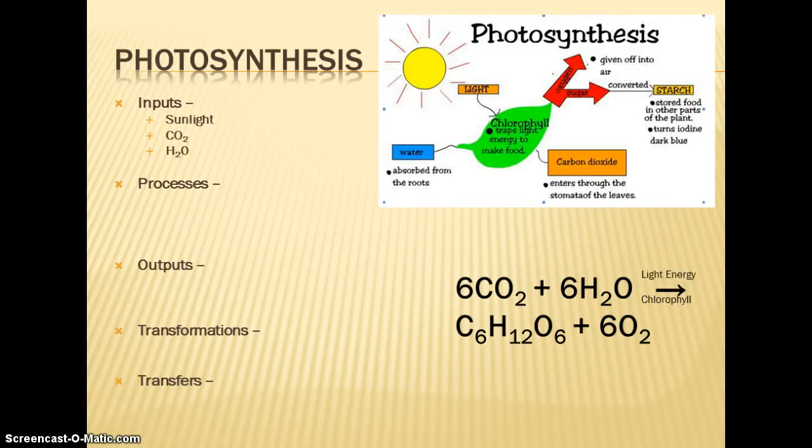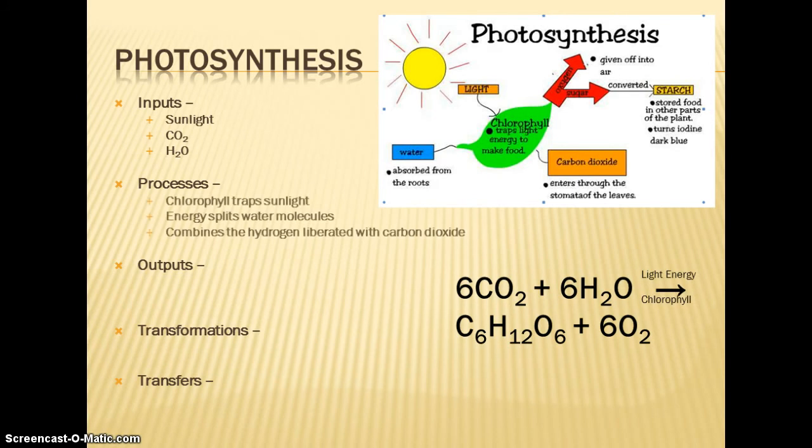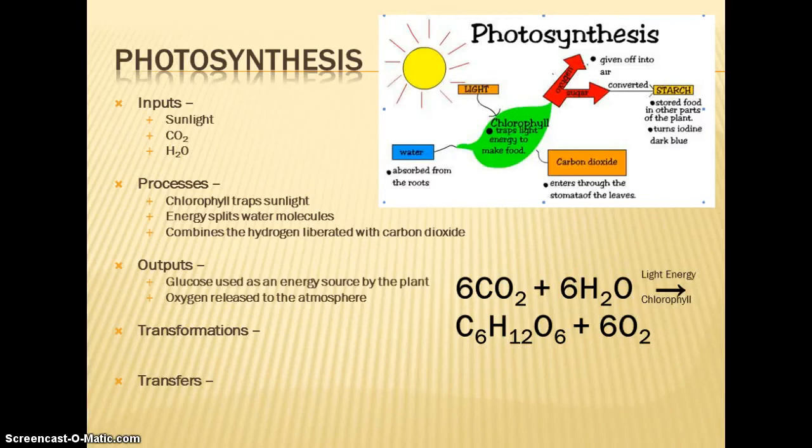Photosynthesis: our inputs are sunlight, carbon dioxide, and water. The processes that occur are chlorophyll in the plants traps that sunlight. The energy splits the water molecules, and that hydrogen from the water molecule is combined with carbon dioxide, and that's what gives us the glucose. So our outputs: glucose, which is the energy source used by the plant and also those in later trophic levels, and then the oxygen that was left over from the water molecules and the carbon dioxide is released into the atmosphere.